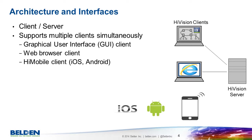Having said that, we also offer a browser interface as a client, but this tends to be used on a temporary basis. As industrial networks are generally mission critical and any downtime could have serious consequences, the administrator needs to be able to get information at any time. Our HiMobile client, running on iOS or Android, provides in-depth information about the network at any location.